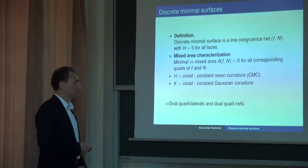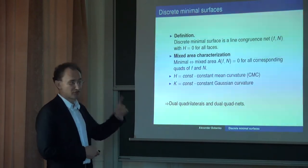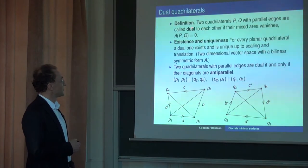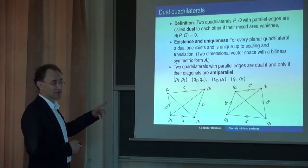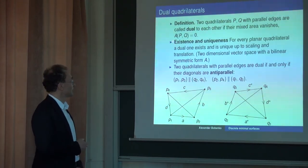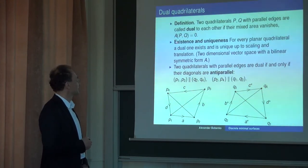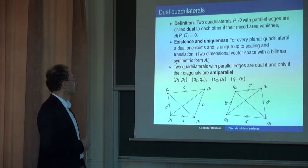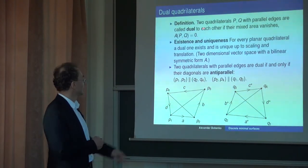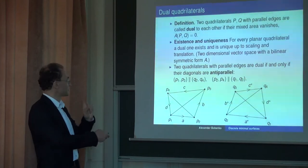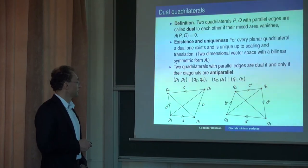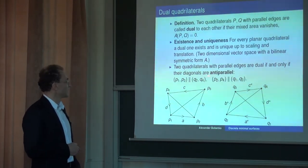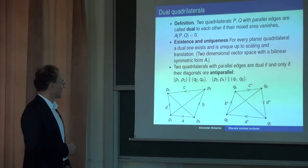This way we come to the notion of dual quadrilaterals. We are doing all this theory just for one quadrilateral — there is no surface yet, but there are interesting facts about quadrilaterals. Two quadrilaterals p and q with parallel edges are called dual to each other if their mixed area vanishes. For every planar quadrilateral, a dual one exists and is unique up to scaling and translation — this follows from the fact that we are in a two-dimensional vector space and the mixed area is a scalar product.